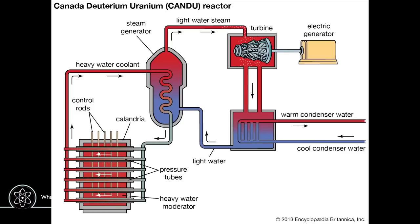The principle of operation of a CANDU reactor is very similar to a typical light water reactor: nuclear fuel fissions inside the core, neutrons heat the uranium, fission occurs, atoms are split, energy is released, water is turned into steam, and the steam turns turbines to produce electricity. However, the main difference is that CANDU reactors use heavy water for both their coolant and their moderator.